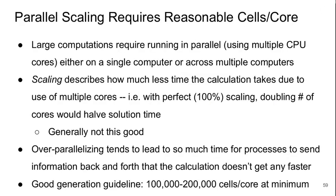Modern large computations typically require running in parallel, using multiple CPU cores either on a single computer or across multiple computers. To do this well you need a reasonable number of cells per core. Scaling describes how much less time the calculation takes due to the use of multiple cores — with perfect 100% scaling, doubling the number of cores cuts solution time in half. Generally you don't get that perfect performance, and over-parallelizing leads to so much communication overhead between processes that the calculation doesn't get any faster. A good general guideline is 100,000 to 200,000 cells per core minimum for good scaling.